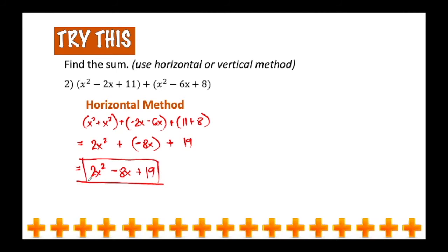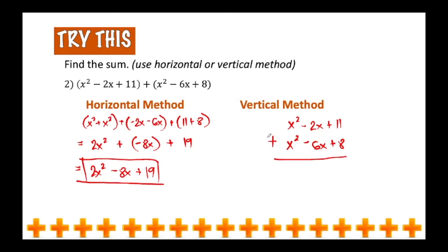Now let me show you how to do it using the vertical method. Write the first quantity first: x squared minus 2x plus 11. When you write the second quantity, make sure that like terms are aligned — align x squared with the other x squared, align negative 6x with negative 2x, and align 8 with positive 11. Then add from left to right: x squared plus x squared gives 2x squared, negative 2x plus negative 6x gives negative 8x, and 11 plus 8 gives 19. The answer is the same.